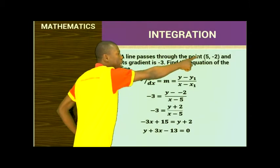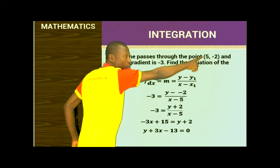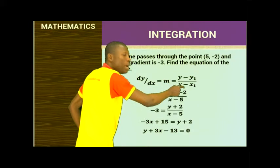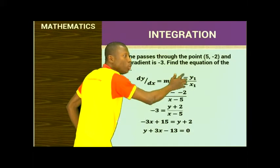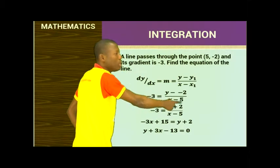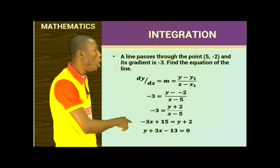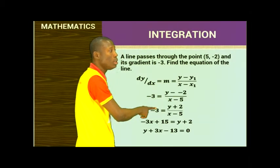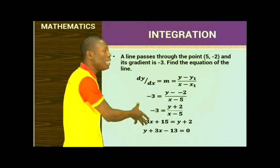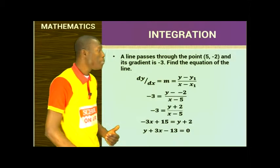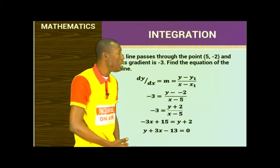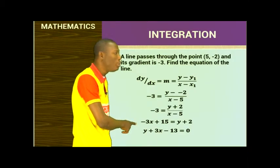With coordinate (5, -2): x1 equals 5 and y1 equals -2. Substituting into the formula: (y minus (-2)) / (x minus 5) equals -3, giving (y + 2) / (x - 5) equals -3. Cross-multiplying: -3(x - 5) equals y + 2, so -3x + 15 equals y + 2, rearranging to give -3x minus y minus 13 equals 0. That is the equation of the line.